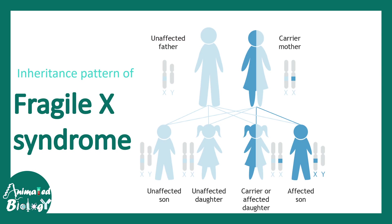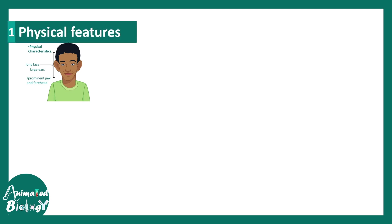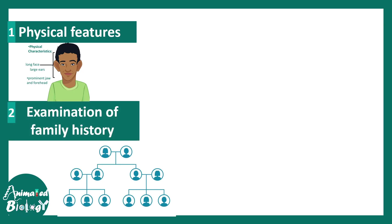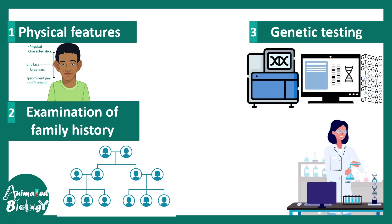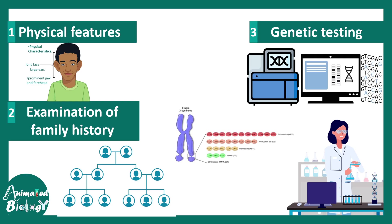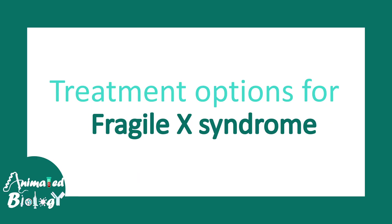Regarding inheritance, Fragile X Syndrome follows X-linked inheritance — males are more susceptible and females often become carriers. Diagnosis can be made by looking at distinctive facial features like a long face, large ears, prominent jaw and forehead, and examination of family history is important given its genetic nature. Ultimately, genetic testing is the most important and confirmatory test, with looking at the number of CGG repeats being the basis of definitive diagnosis. There is currently no treatment available for Fragile X Syndrome.